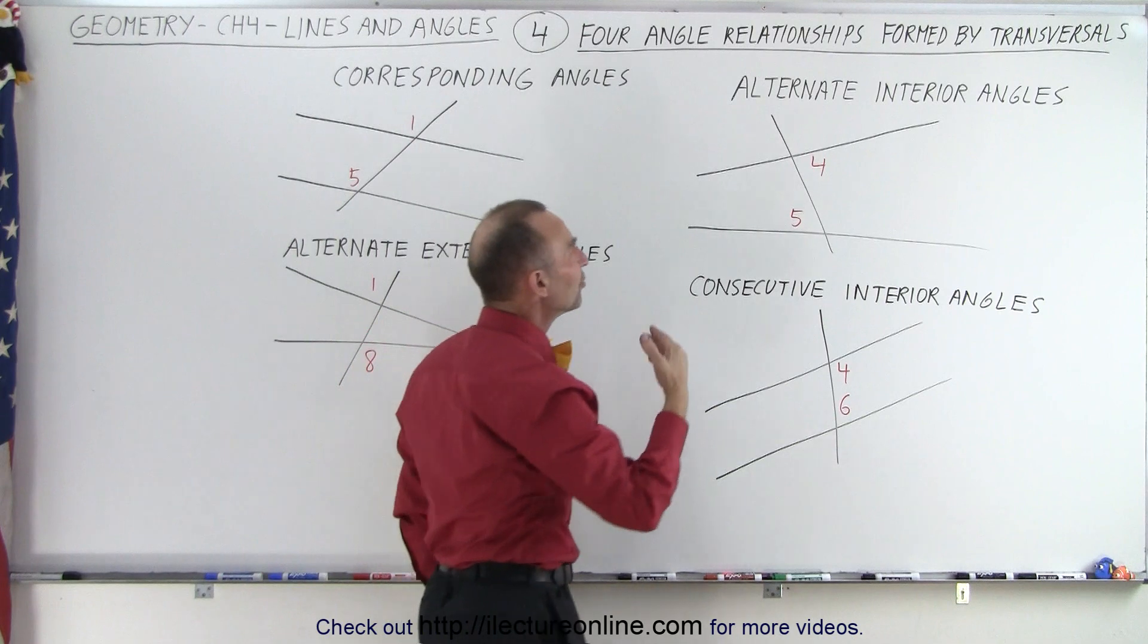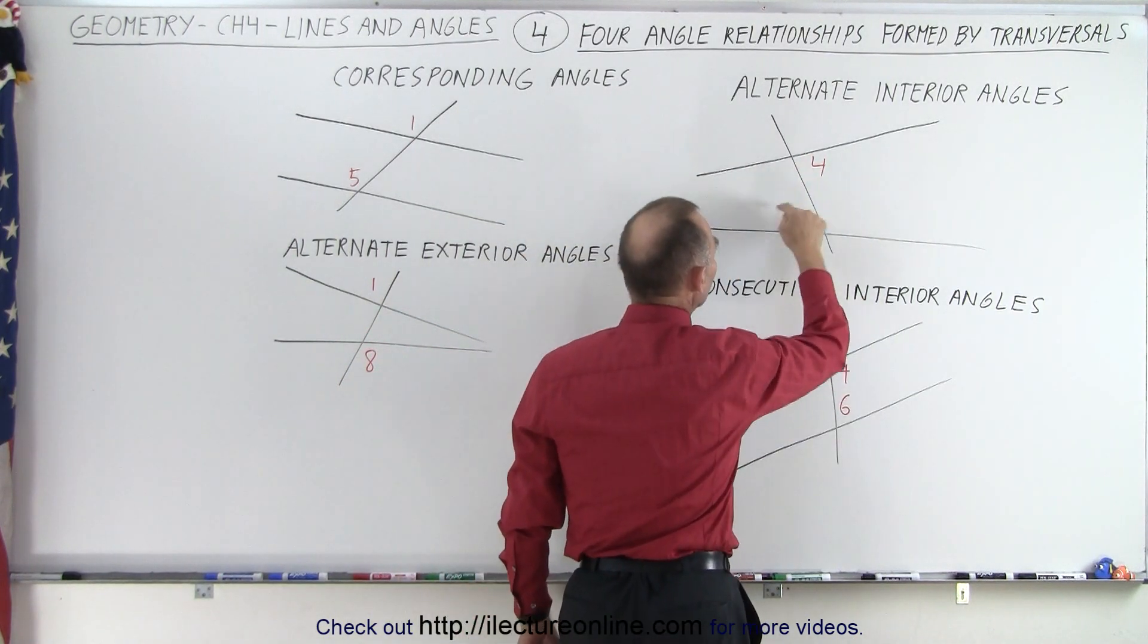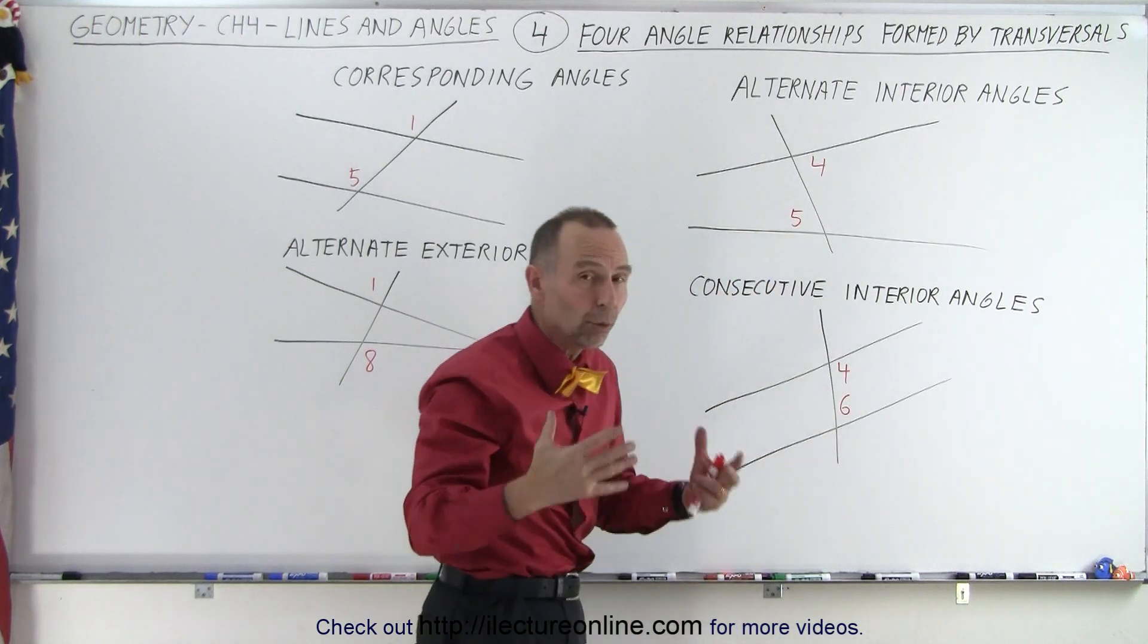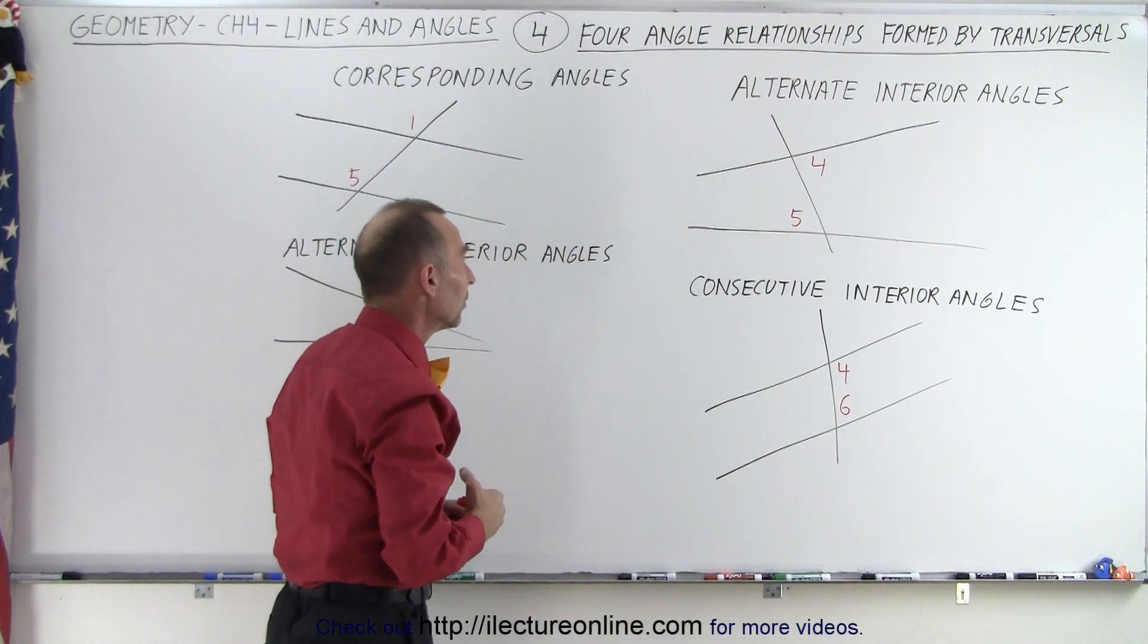We also have what we call alternate interior angles. So there are four interior angles. These are called alternate interior angles. These are just examples - there are more we can come up with, but I just want to show you some examples.